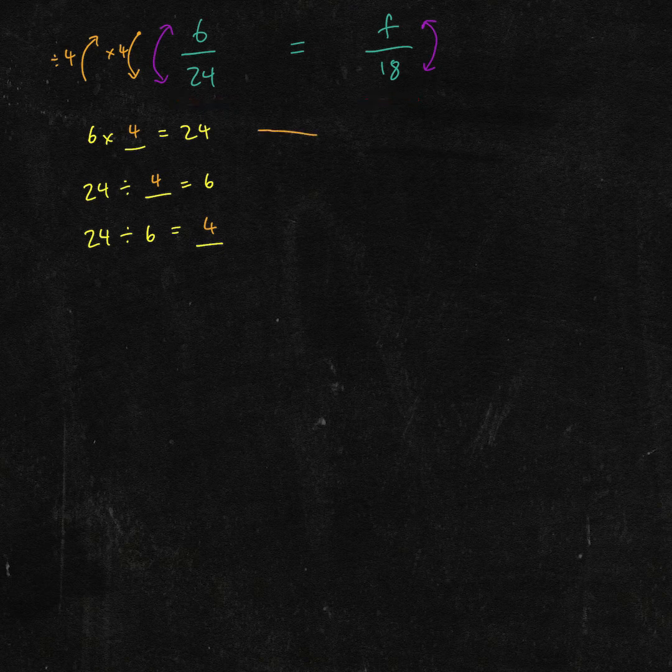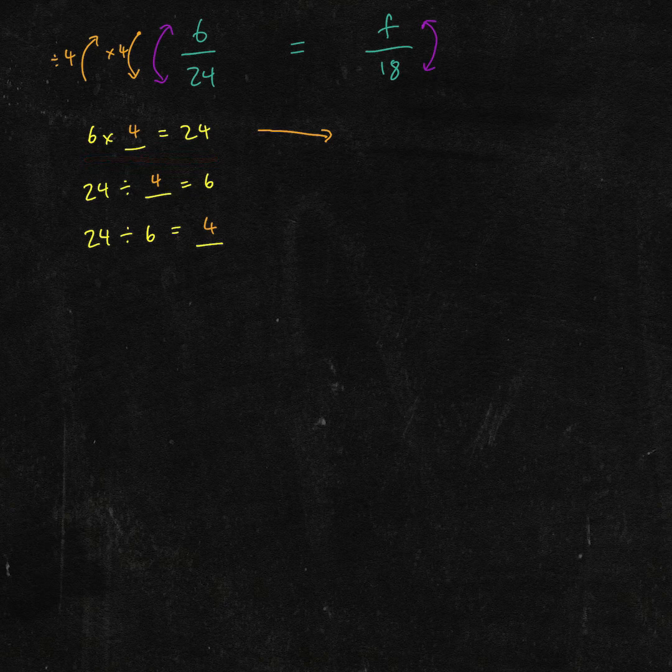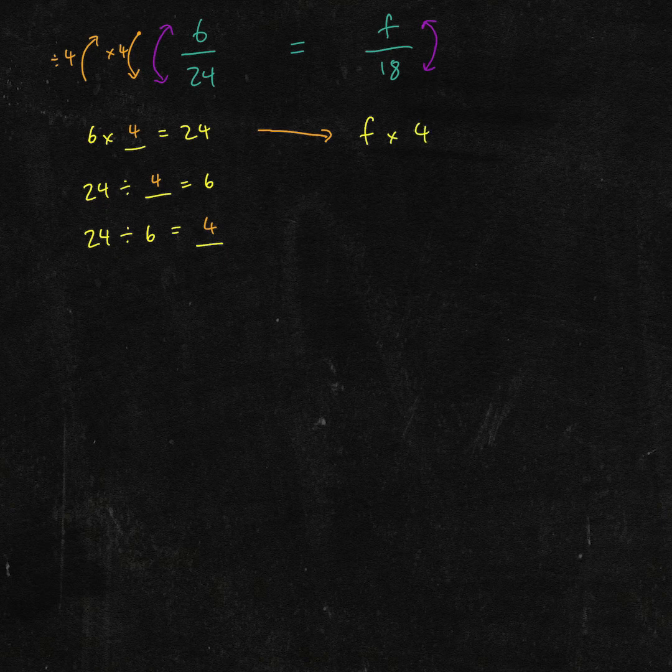Now, for F, let's borrow this one for example. If 6 times 4 equals 24, then F times 4 should equal 18.